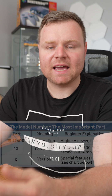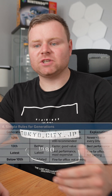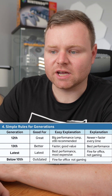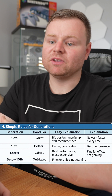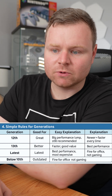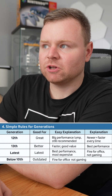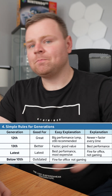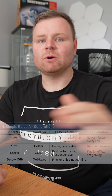Generations are basically the age of the CPU. You've got the 12th gen, 13th gen, 14th gen, or even older versions like the 10th gen. So if you want an i5 that is mid-level and cost-affordable, look for something in the 12th or 13th generation.